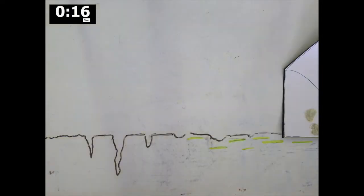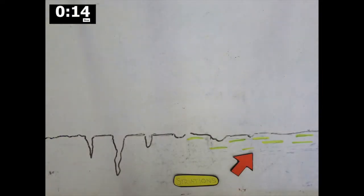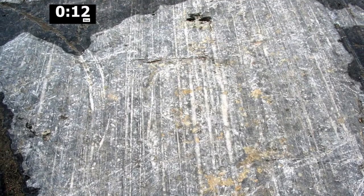During abrasion, a glacier may scratch the landscape. These scratches, called striations, can still be seen today.